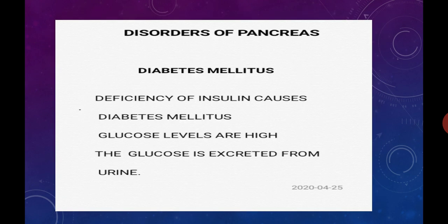The disorder of the pancreas is diabetes mellitus. Diabetes mellitus is caused because of a deficiency of insulin hormone. If there is malfunctioning of the beta cells of islets of Langerhans, insulin is secreted in very less amount or may not be secreted at all. This deficiency of insulin causes diabetes mellitus, in which glucose levels are high and this excess glucose is excreted out from the urine.